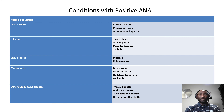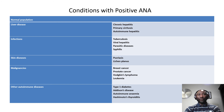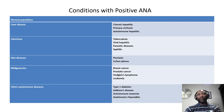A positive ANA doesn't necessarily mean you have disease. There are certain disease states where a positive ANA can be found: the normal population, liver disease, certain infections, certain skin diseases like psoriasis or lichen planus. Even malignancy states like breast, prostate, lymphomas, and leukemias can have a positive ANA. Many autoimmune diseases — not necessarily rheumatic, such as type 1 diabetes, Addison's disease, autoimmune thyroiditis, or autoimmune anemia — can also have a positive ANA. ANA is often a pointer towards autoimmunity, but having an ANA doesn't necessarily mean you have autoimmune disease. You can even inherit an ANA from parents with an autoimmune disease.